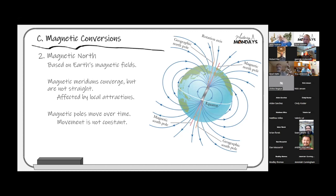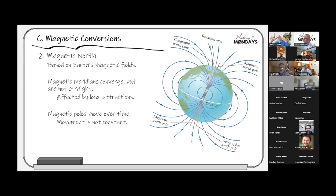Magnetic meridians converge to the poles but are not uniform. There are local variations — for example, in northwestern Wisconsin and northeastern Minnesota, the iron ore and taconite mines caused anomalies that screwed up everything. That's actually why Burt developed the solar compass — when he got to northern Wisconsin he couldn't trust his magnetic compass and had to find another way to determine the meridian. All sorts of local anomalies affect magnetic north, and its movement is not constant over time.